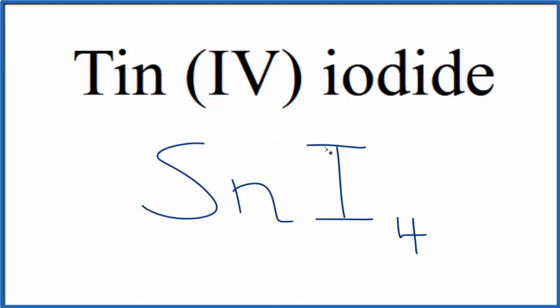If you were given this formula and asked to write the name, you know the iodide ion is 1-, and you have four of them, so the tin has to be 4+. That's why we write the Roman numeral, since it's a transition metal.